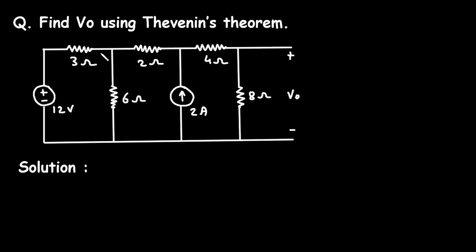If you want to see more topics then check the playlist section of this channel. Also if you want to buy my notes then check the link in the description below. In this video we will see a problem on Thevenin's theorem. Find V0 using Thevenin's theorem. Now for this circuit we have to find the value of V0. This V0 is the voltage across this 8 ohm resistance.